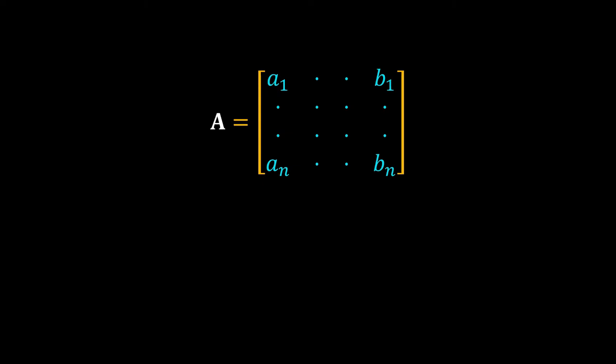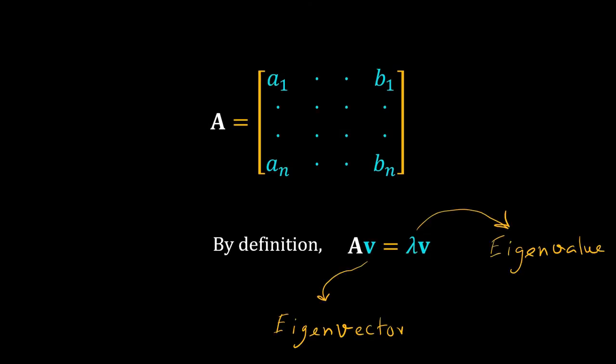Let A be a square matrix. Then by definition, A into v is equal to lambda into v, where lambda is a scalar and is an eigenvalue of the matrix. V is the corresponding eigenvector. Note that v must be a non-zero vector.